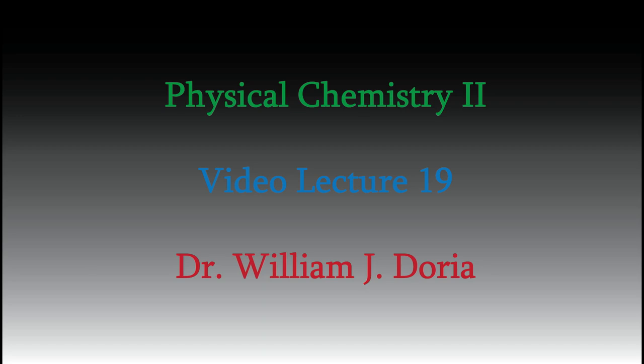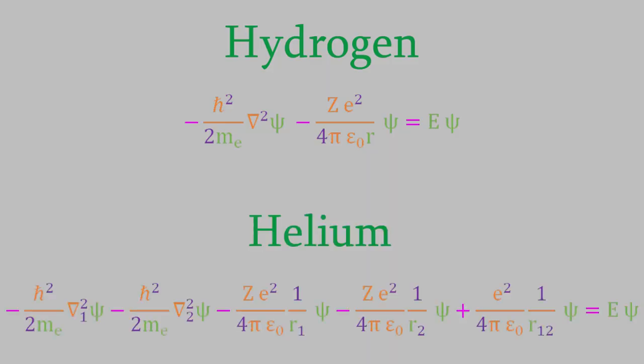Hi, and welcome again to my series of videos for Physical Chemistry 2. In the last video, we looked at the Schrödinger equation for the hydrogen and helium atoms, and we saw how you can use atomic units to make those equations a little simpler. And as we'll see in future videos, we can use what we've learned to write the Schrödinger equation for even larger atoms, and even molecules.